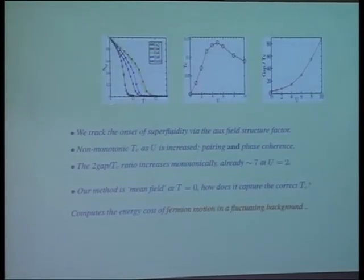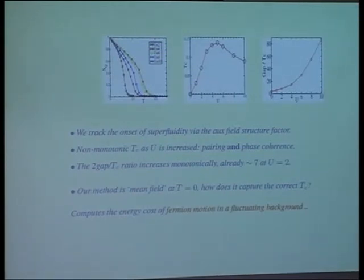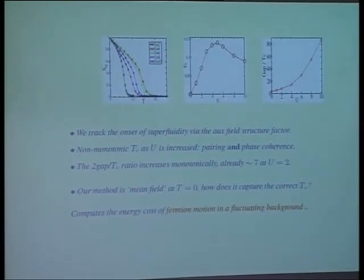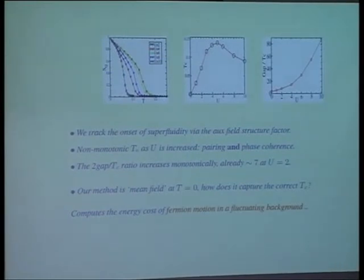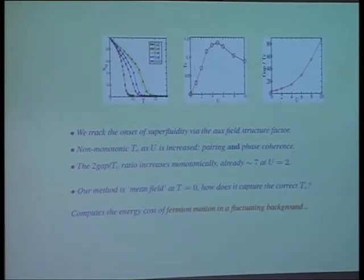We have a model in the XY class with U(1) symmetry. We keep track of the auxiliary field correlations and look at the Q=0 structure factor related to the deltas — how the delta phases correlate as we reduce temperature. This is the ferro-magnetic structure factor associated with those deltas as a function of temperature. At U=2, you have some Tc maybe around 0.08. As you increase the strength of interactions to U=4, there is a significant increase. At U=6 it reduces slightly. Going to stronger values, you trace out a curve. The peak occurs somewhere between U=4 and 5, with peak value around 0.13-0.14. As a gross comparison, this is not going too badly compared to a full Quantum Monte Carlo calculation.